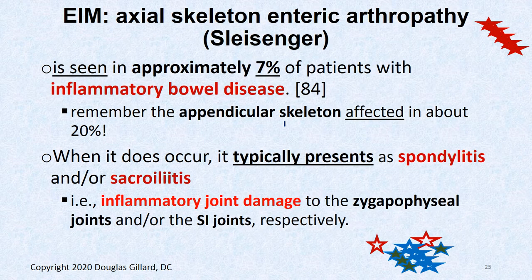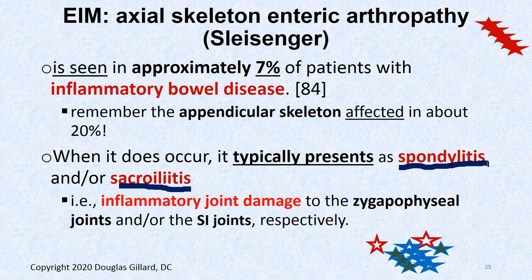The axial skeleton can be affected in about 7% of people with inflammatory bowel disease. When it does occur, it really likes the SI joints, causing sacroiliitis. It can also affect the facet joints, causing a spondylitis — inflammation and destruction of the zygapophyseal joints.